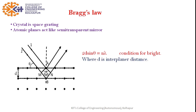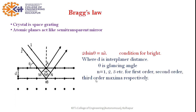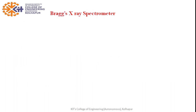In Bragg's law, d is the interplanar distance, theta (θ) is the glancing angle — the angle between the incident X-ray beam and the atomic plane — and n is an integer: 1, 2, 3, etc., corresponding to first order, second order, third order maxima respectively. Bragg's law is the principle used to study crystal structure, and the setup used for crystal structure analysis is known as Bragg's X-ray spectrometer.